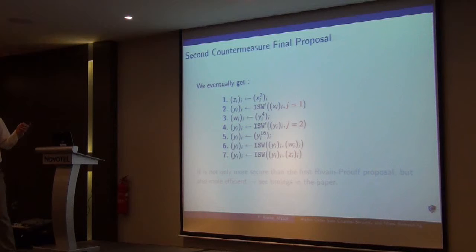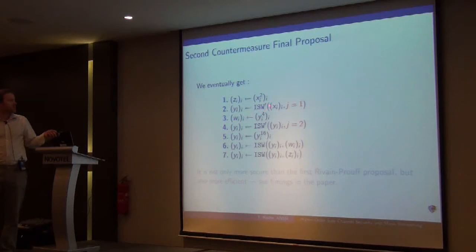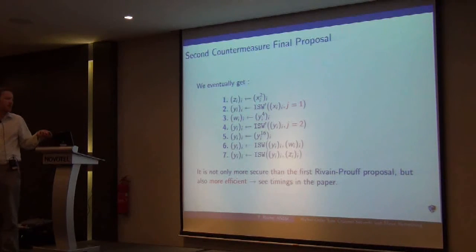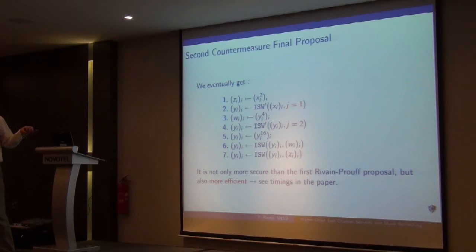What we get finally, the whole exponentiation to the power of 254 looks like this, with two secure h functions, and two products, two secure multiplications with three power squarings. We can show that on this target platform, it is more efficient than the old version, the Rivain-Prouff version, and also more secure.